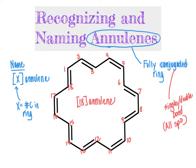Drawing these geometrically pleasing shapes is something you could do with software, not necessarily something you'd want to draw on paper. So generally, if I were giving you a question like this, I would give you the structure and ask you to provide the name. What you need to do is look at the structure, count the number of carbon atoms, make sure it's a fully conjugated system, and then use the number in brackets to indicate how many carbon atoms are in this conjugated system, followed by the term annulene to specify it is a fully conjugated ring.